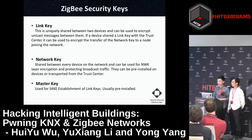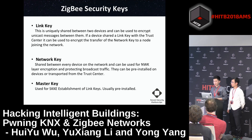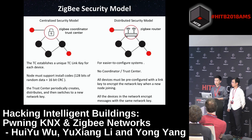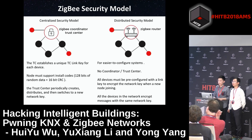The second type is the network key. It is shared between every device on the network and can be used for network layer encryption and protecting broadcast traffic. It can be pre-installed on devices or transported from the trust center. The last type is the master key, used for SKKE determination of link keys, usually pre-installed. To satisfy a wide range of applications while maintaining low cost and power, ZigBee offers two network security models: distributed and centralized.